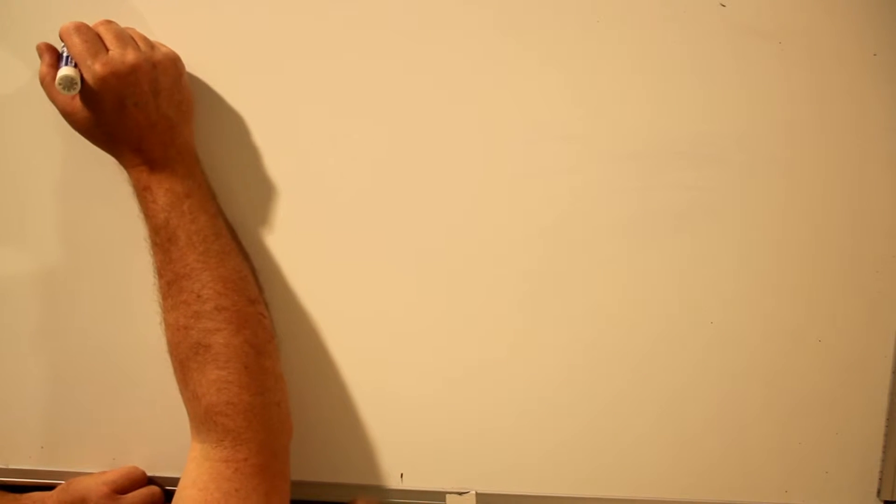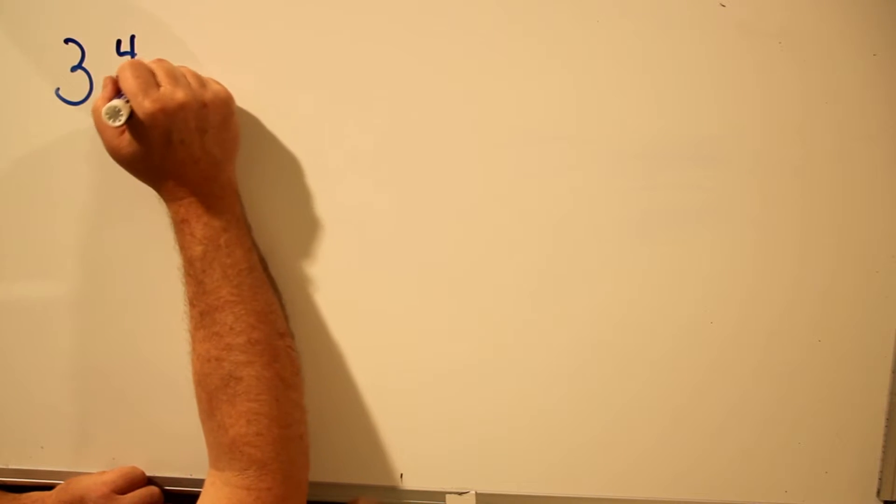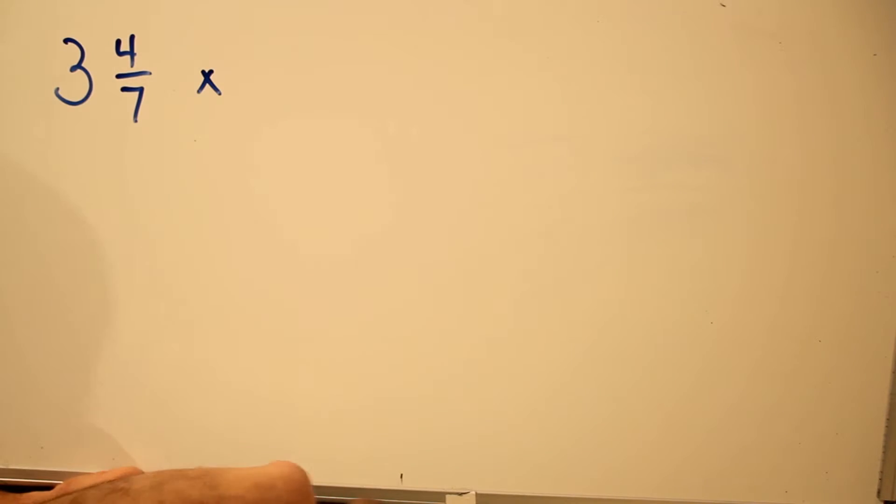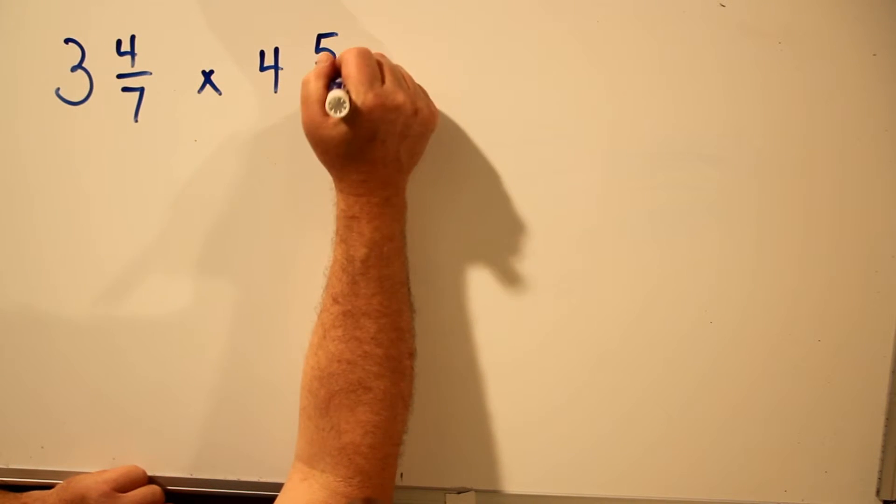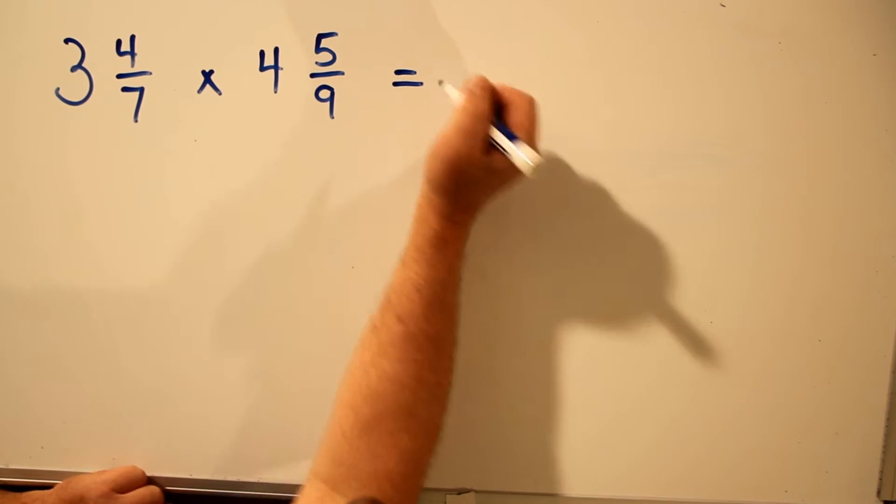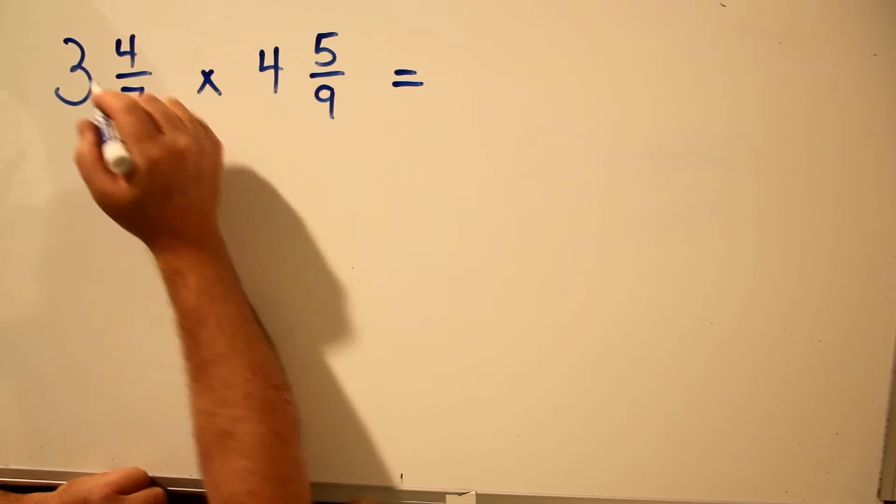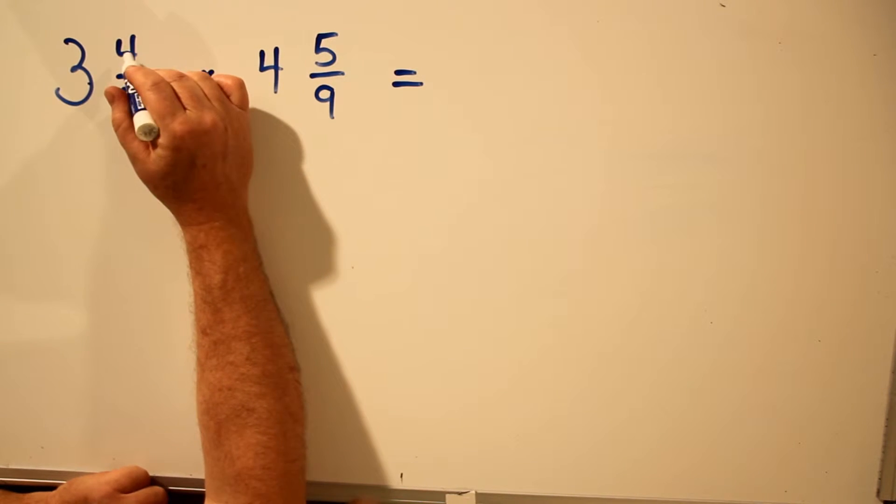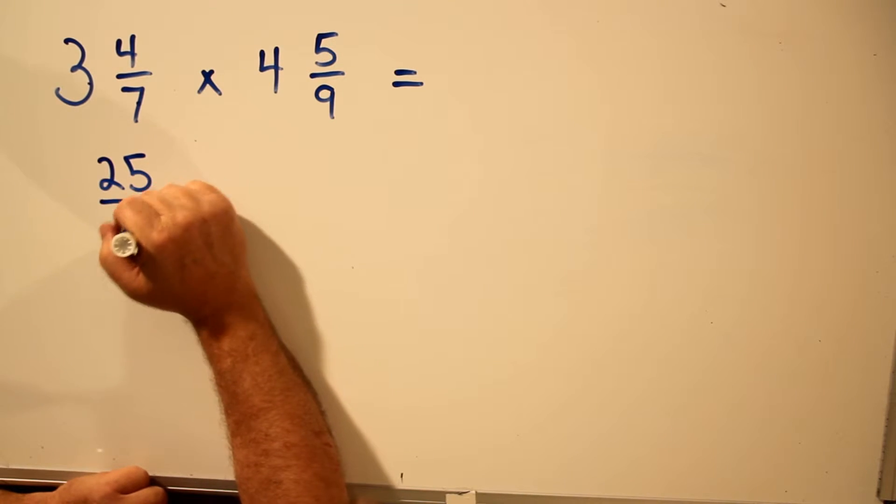Let's see what happens when we multiply two mixed numbers together. Let's take 3 and 4/7 and multiply it by 4 and 5 over 9. What do we get? Well, now we have to convert both numbers to improper fractions. So we multiply 3 times 7 is 21, plus 4 is 25. Keep the bottom number the same.